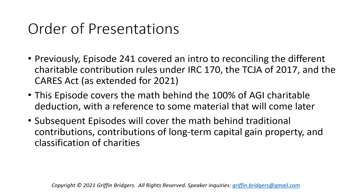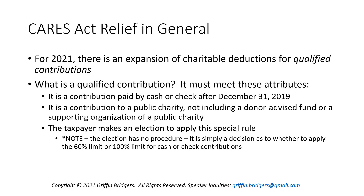In terms of our order of operations, episode 241 covered an intro that reconciled some of the different charitable contribution rules under Code Section 170, the Tax Cuts and Jobs Act of 2017, and the CARES Act as extended for 2021. Today we're going to dive into the math behind the 100% of AGI charitable deduction. We'll also cover in future episodes the math behind traditional contributions subject to lower AGI limits, contributions of long-term capital gain property, and classifications of charities.